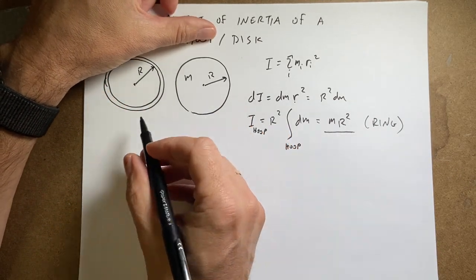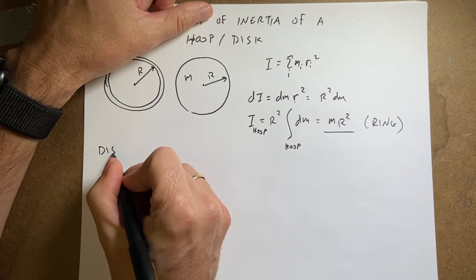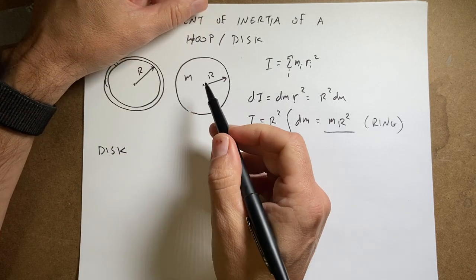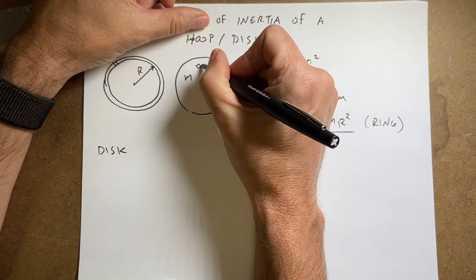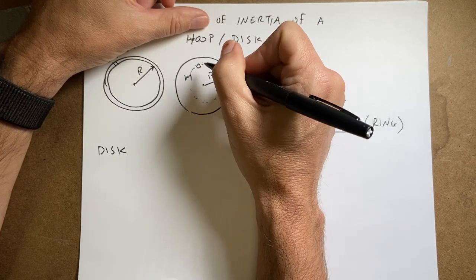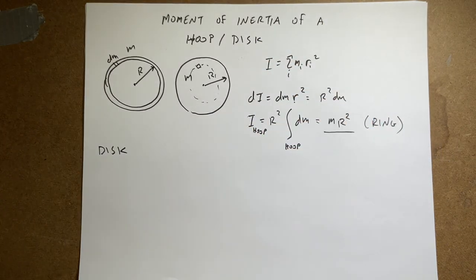But now let's do the disk. So again, we need to break this into pieces. And I could break it into little pieces like this and then add up all these pieces going around. And I could then I have to change the circle and everything. But if we're smart, we can pick smarter pieces to break this into.